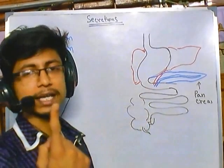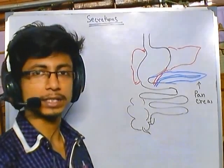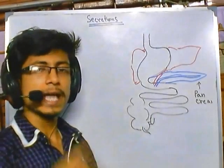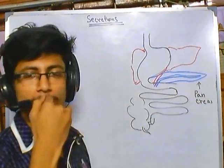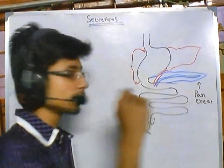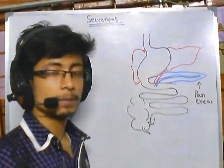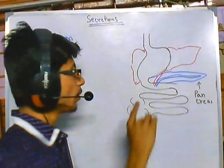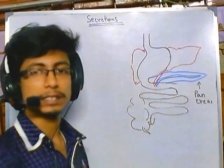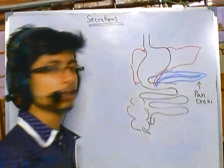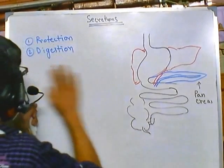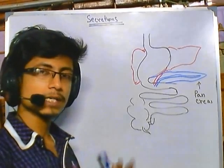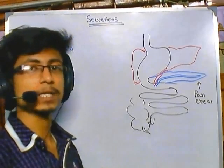Whatever food we take, the stomach mixes in only one enzyme — pepsin. At the mouth, amylase acts on carbohydrates. For protein, the first enzyme is secreted in the stomach. But there is no enzyme to degrade lipid secreted either in the mouth or in the stomach. So this is the first region where lipid-degrading enzymes are secreted — from the pancreas and liver. The pancreas contains three major types of enzymes responsible for cleaving carbohydrates, proteins, and fats.